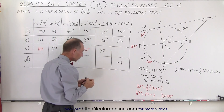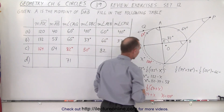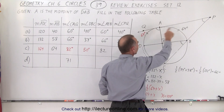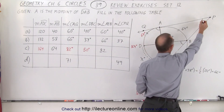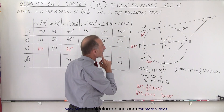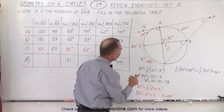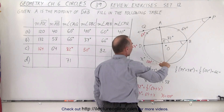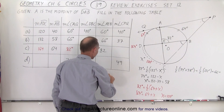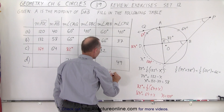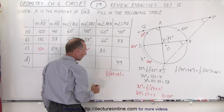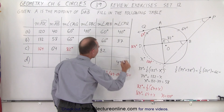And finally angle C to P to Q — that's this angle right here. That would be half the difference between this arc and that arc. So we have one half of 164 minus 64, which is one half of 100, or 50.